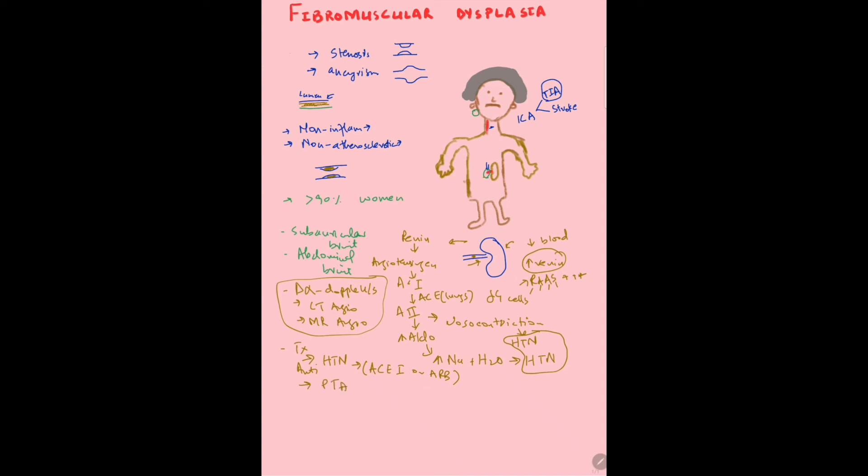Second would be PTA, percutaneous transluminal angioplasty. A balloon is inserted into the narrowed vessel and then dilated, which opens up the vessel. If that doesn't help, there's surgery. Hope this was helpful, just a quick discussion about fibromuscular dysplasia. Remember that it's most common in women, about greater than 90 percent.